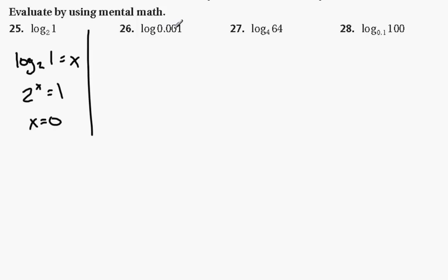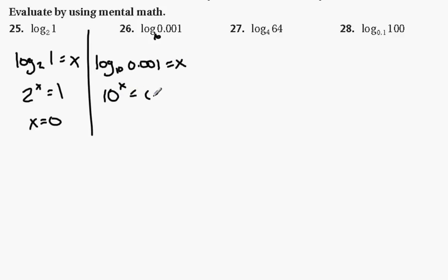Here I have log 0.001. We know that this has a base 10 because it's a common log. So we turn this into an equation: log base 10 of 0.001 equals x. So we go 10 to the x equals 0.001. Think of this — we're moving this decimal place 1, 2, 3 places to the right. So x is going negative. That would be 10 to the minus 3. So x equals negative 3.